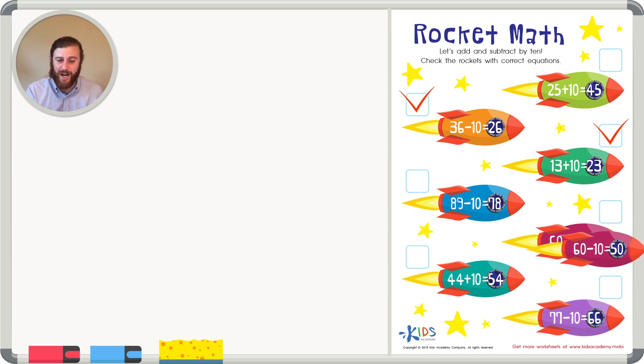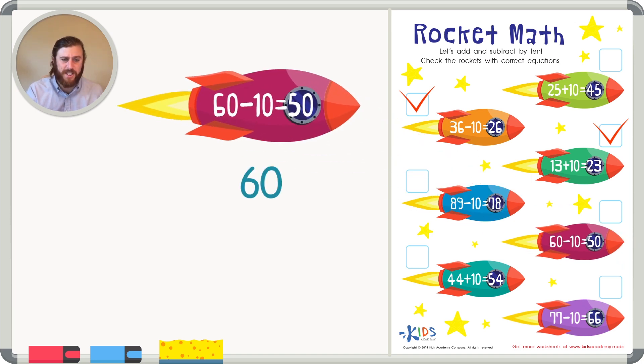Let's look at our last few rockets. We have 60 minus 10 and it gives a difference of 50. Well let's see if this is correct. 0 minus 0 of course is just 0.